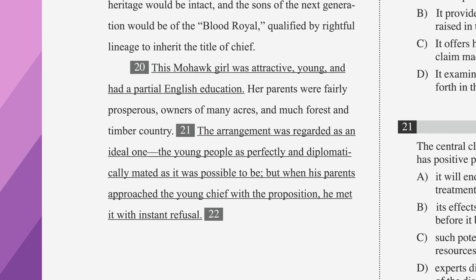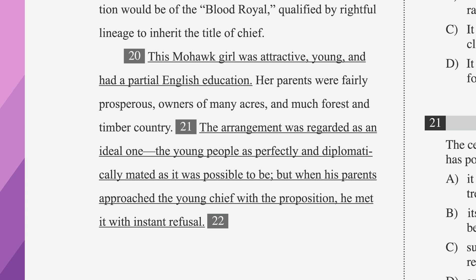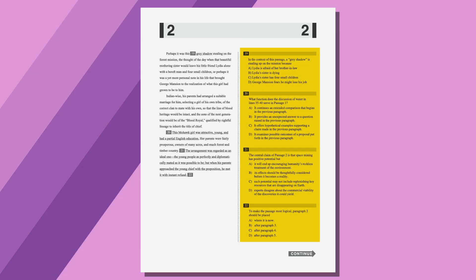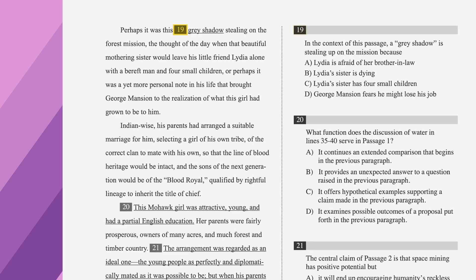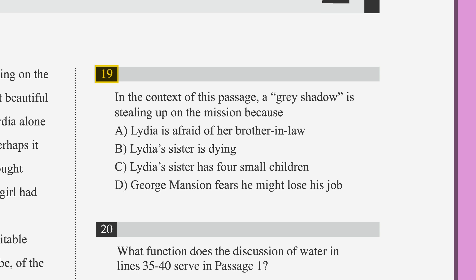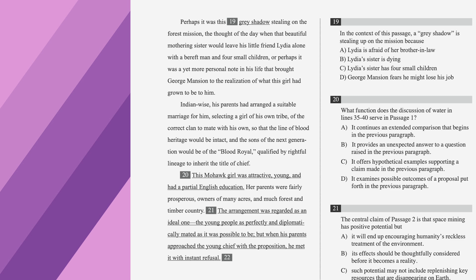You'll be reading rough drafts of essays with portions that are underlined and numbered. The questions are lined up in a column next to the passage or on the following page. Start by reading the passage. While you're reading, you'll come to numbers in gray boxes — this is the sign that it's time to answer a question. Each number corresponds with a question in the column next to the passage. Answer the corresponding question, then move back to the passage and keep reading until you come to the next number.